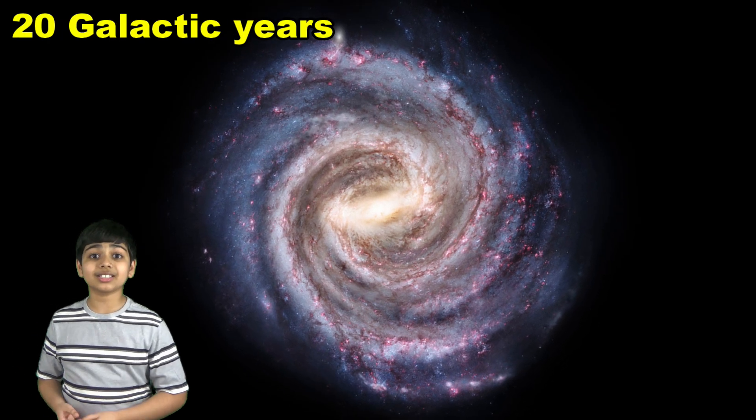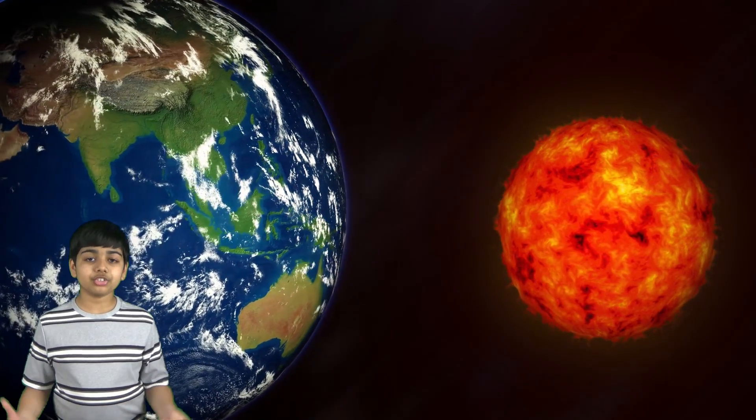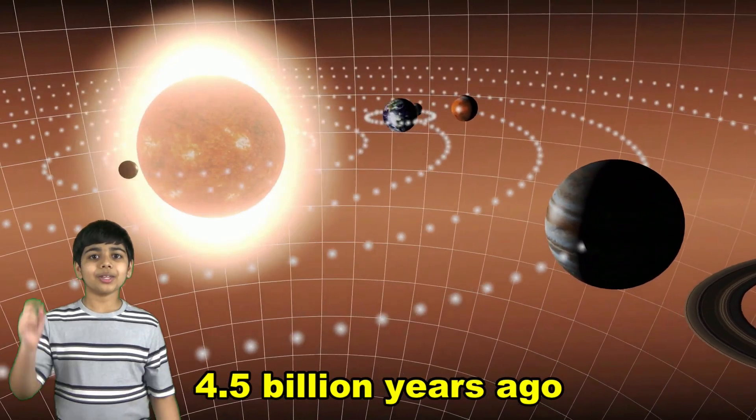It's been 20 galactic years since the sun and the Earth were formed, which means that the age of the solar system is about 4.5 billion years.